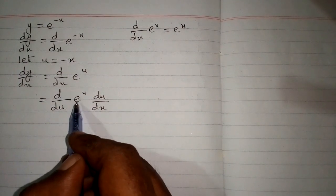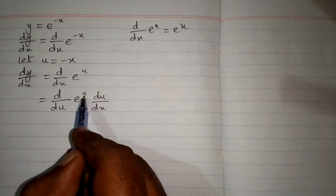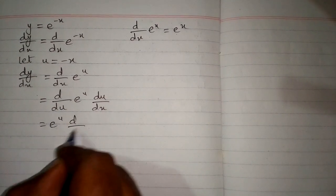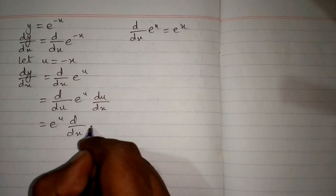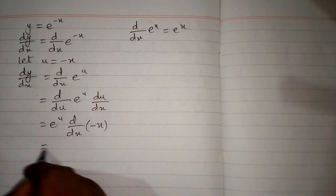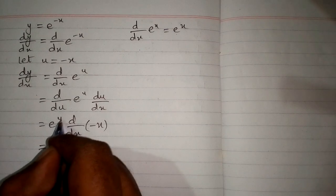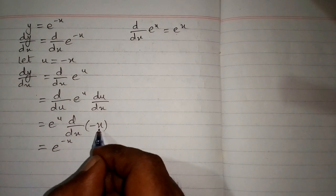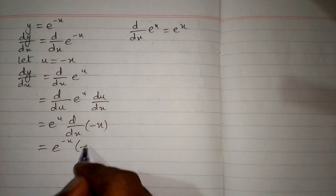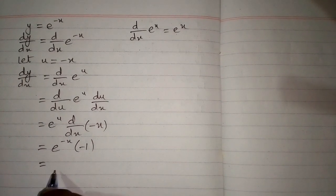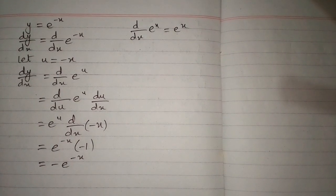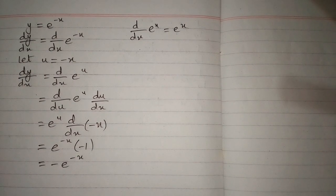Now we can differentiate e to the power u because this variable and this variable is the same. So we have e to the power u multiplied by the derivative of u, which is minus x. Now we will put the value of u which is minus x, and the derivative of minus x is minus 1. So we have minus e to the power minus x. Therefore the derivative of e to the power minus x is minus e to the power minus x.